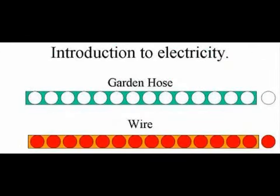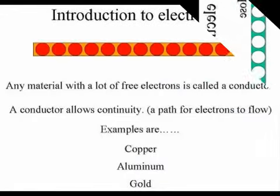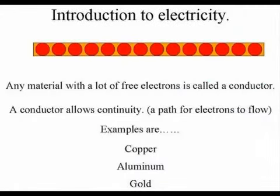We're going to take a bunch of these golf balls and fill the garden hose up from one end to the other. This represents our piece of wire, which is filled with electrons from one end to the other. A piece of wire, for our example, is a good conductor.